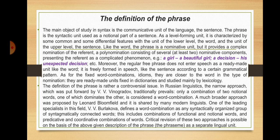The phrase provides a complex nomination of the referent — a polynomination consisting of several, at least two, nominative components presenting the referent as a complicated phenomenon, for example: 'a girl,' 'a beautiful girl,' 'a decision,' 'his unexpected decision.' The regular free phrase does not enter speech as a ready-made unit like the word; it is freely formed in speech like the sentence, according to a certain grammatical pattern. Fixed word combinations — idioms — are closer to the word, are ready-made units fixed in dictionaries, and studied mainly by lexicology.